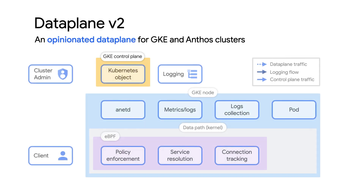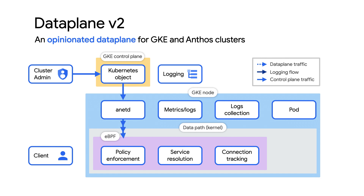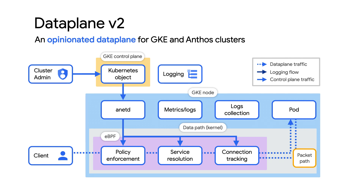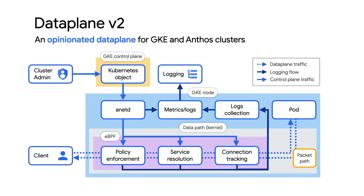I'm pleased to introduce DataPlane v2. DataPlane v2 is an opinionated data plane for GKE and Anthos clusters, and it's been optimized for Kubernetes networking. DataPlane v2 is implemented with eBPF, Extended Berkeley Packet Filter. This handles network packets in the kernel by configuring the data plane using Kubernetes-specific metadata.